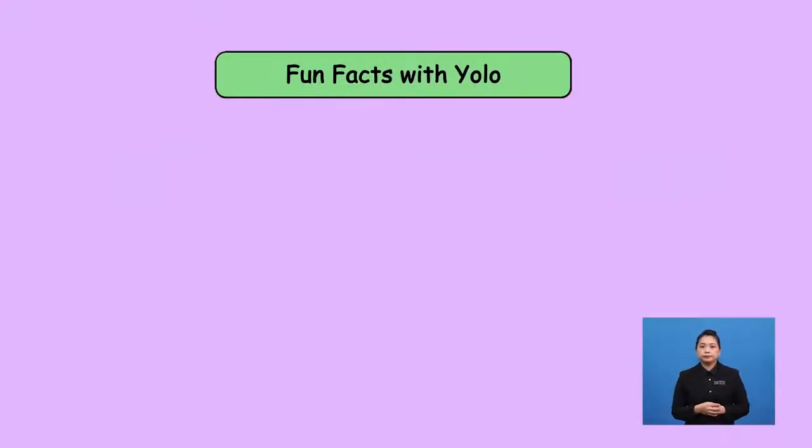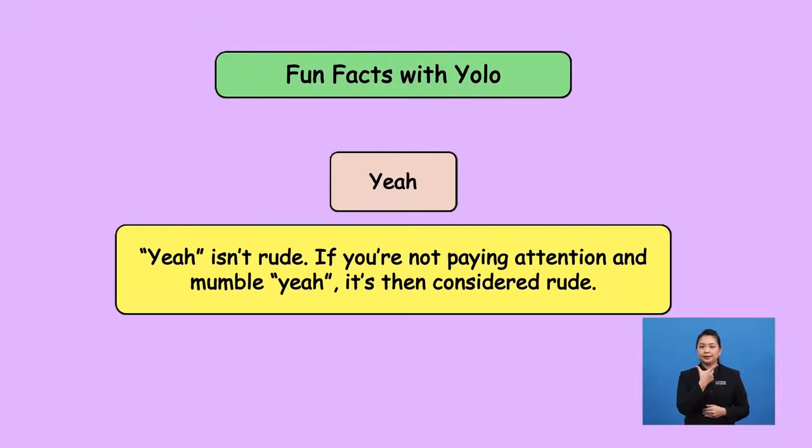If your answer is yes to any questions, you can nod your head up and down a little like this and reply with yeah, yep, sure, mm-hmm sound. That's all about the tone of how you say it. Smiling and happily say, yeah, it isn't rude. If you're not paying attention and mumble, yeah, it's then considered rude.